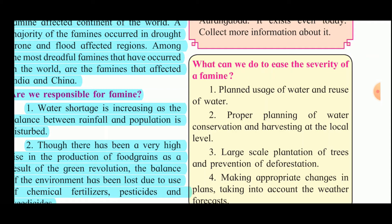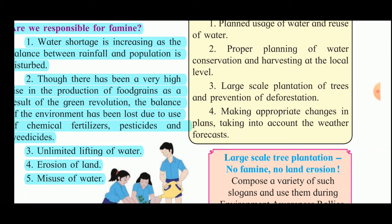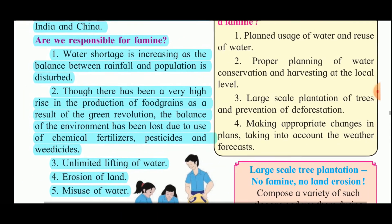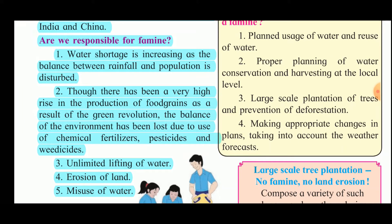Water stored in underground tanks can be used for washing vehicles and gardening. Rain water harvesting can also increase the underground water table. Nowadays tiles and concrete roads prevent water from being absorbed by the soil, causing the underground water table to decrease. Making appropriate changes in water supply plans based on weather forecasts, and large-scale plantation of trees with prevention of deforestation, will lead to more rainfall.